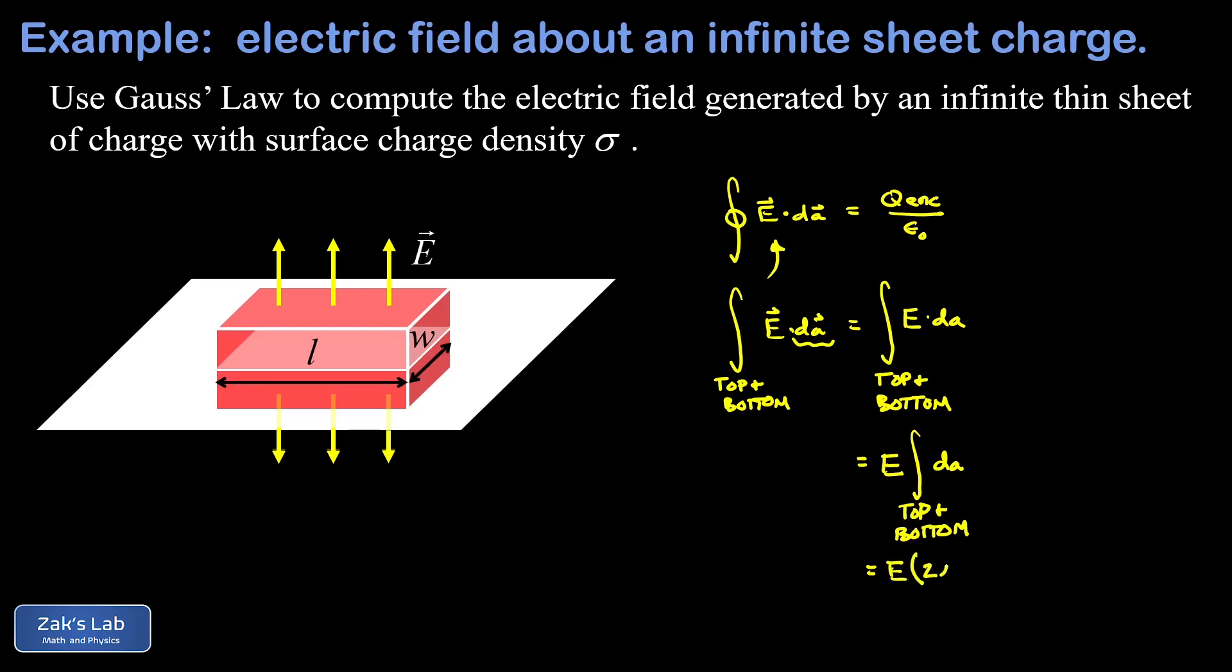Now we have to compute the enclosed charge inside this Gaussian surface. Remember if we take this surface charge density, this area charge density of sigma, and multiply by area we get the amount of charge.